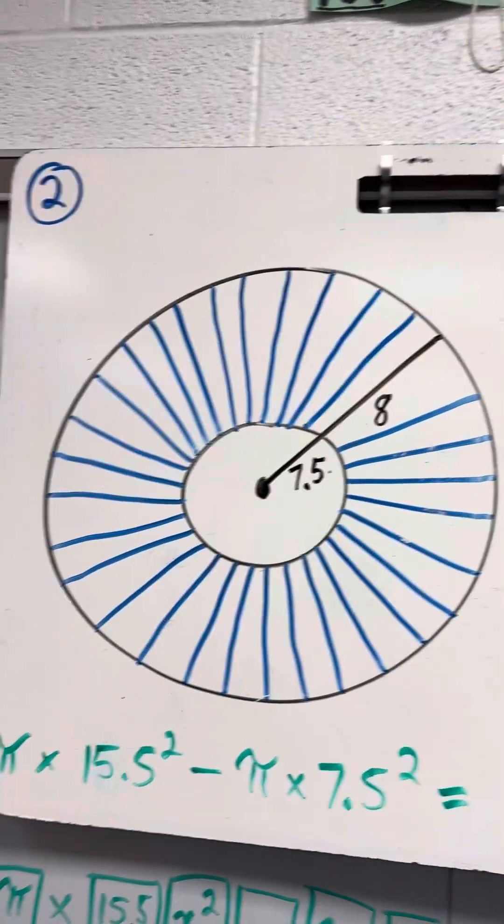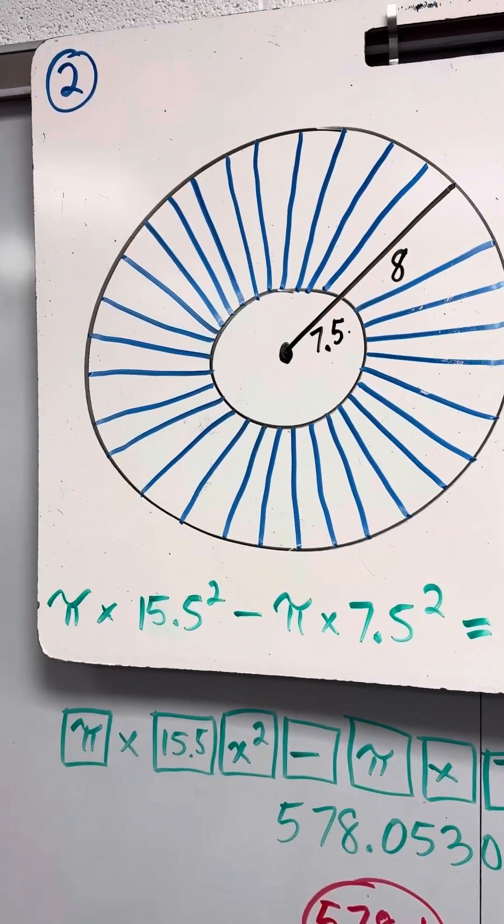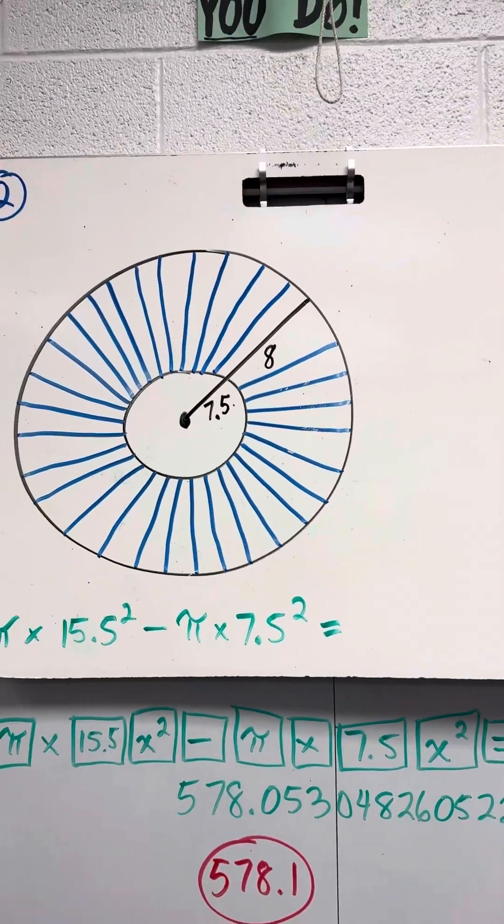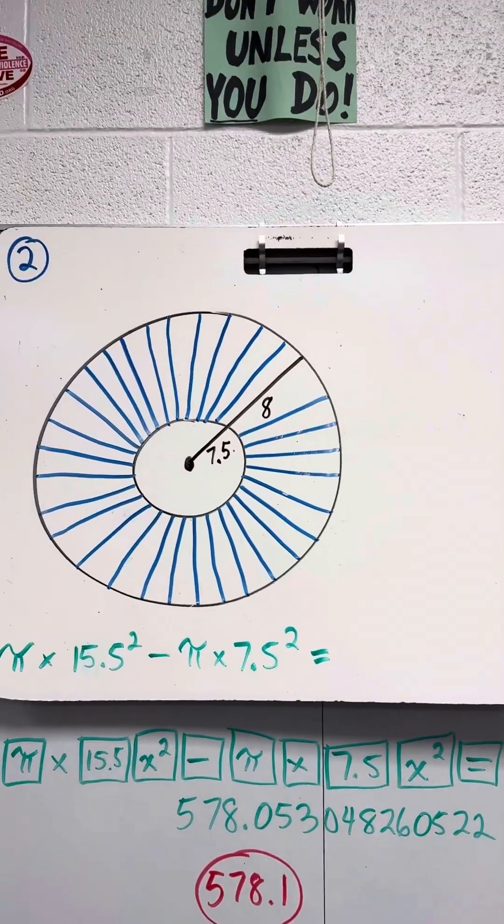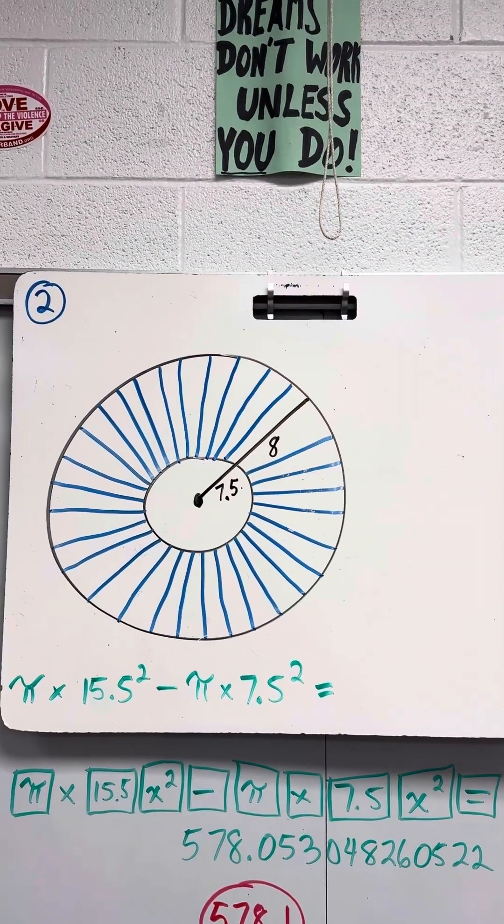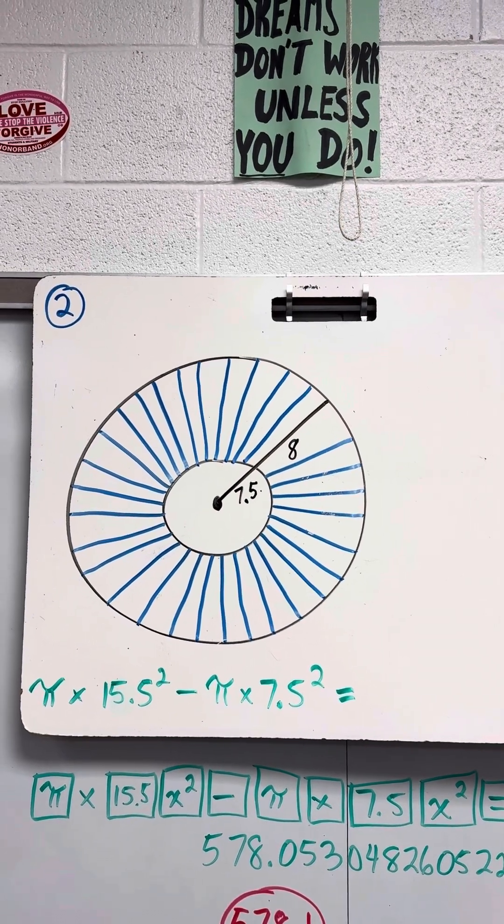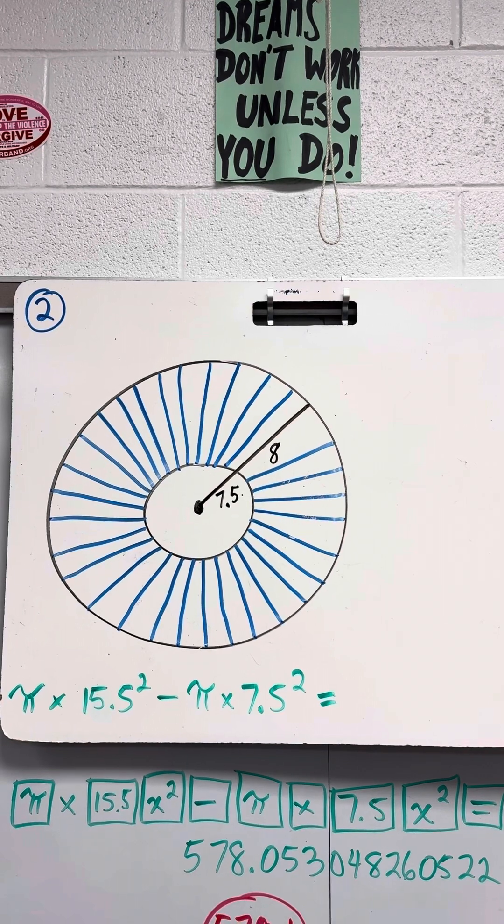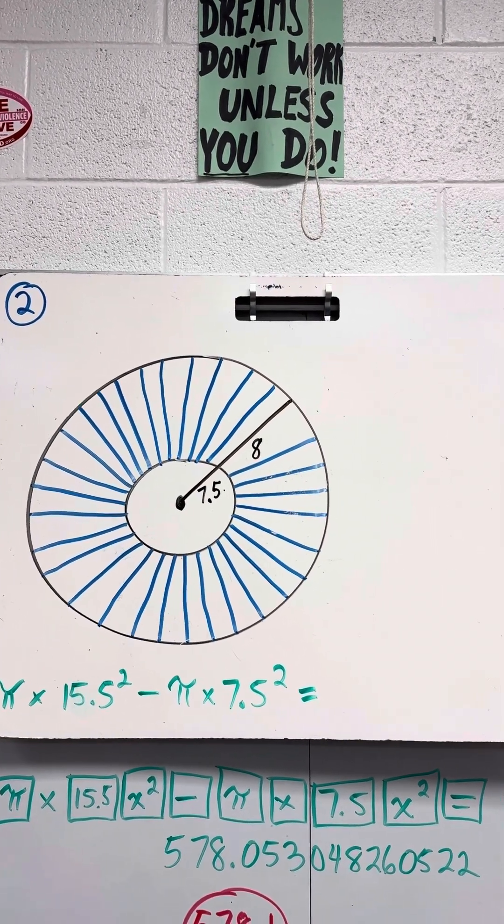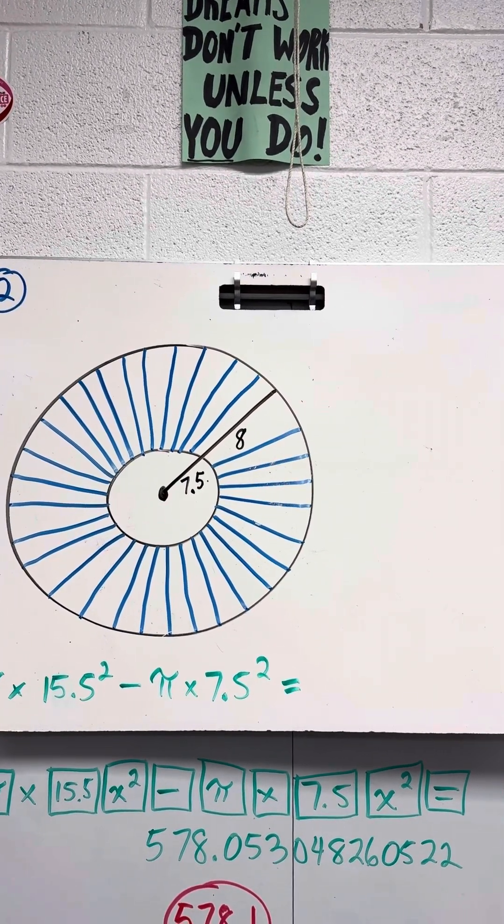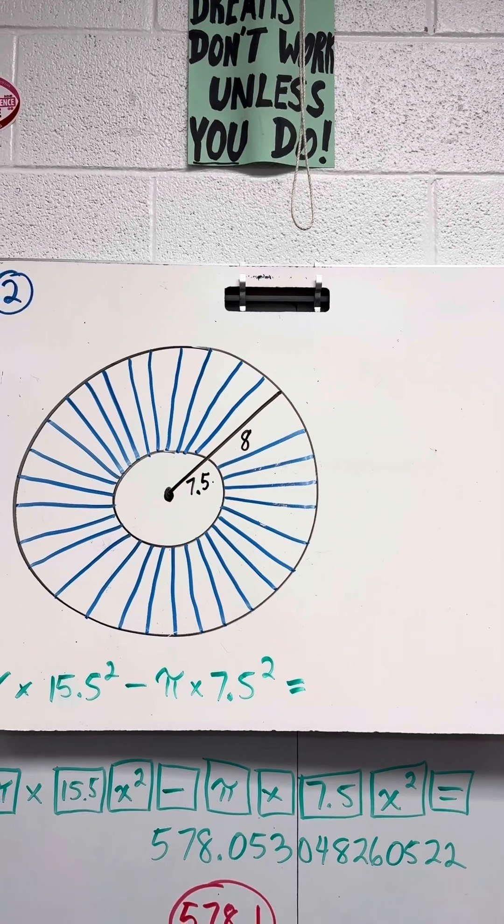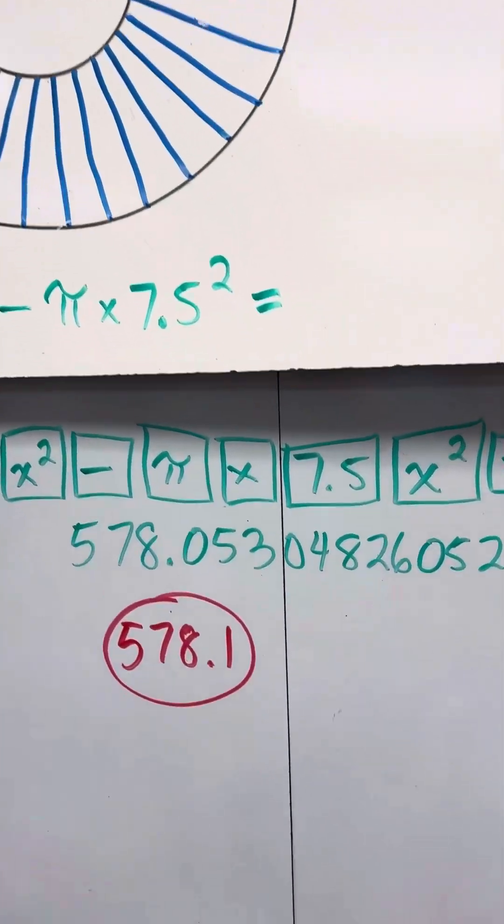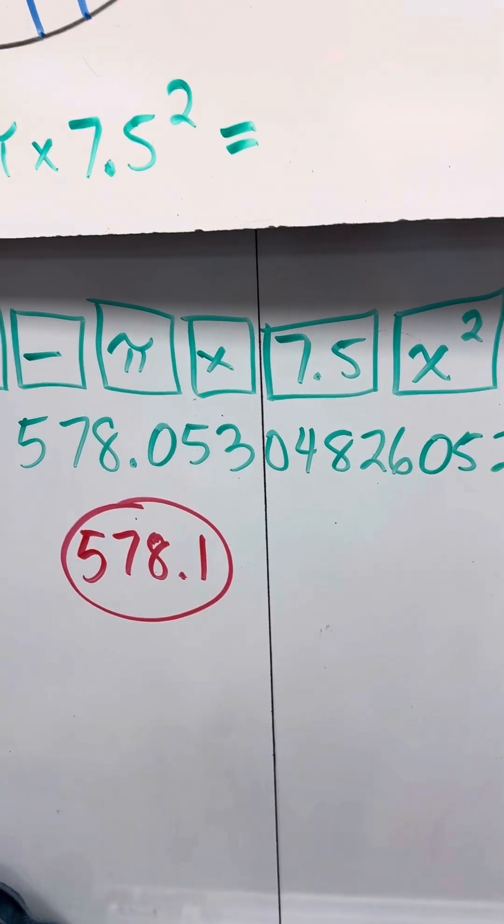On your calculator, you should pause the video and try this. Turn it sideways. You do pi, hit the pi key, times 15.5, hit the x squared key, hit minus, hit pi, hit times, hit 7.5, hit the x squared key, hit equals. You'll get 578.053.